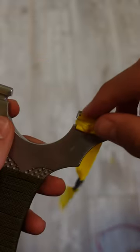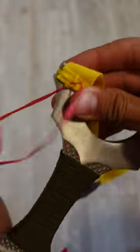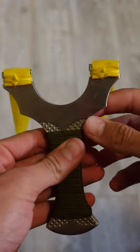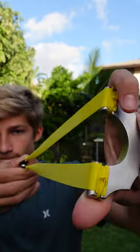If you want to take the bands off you just pull that tab. There's one side, we'll see the next. There you have it. That's how you tie on slingshot bands with the wrap and tuck method.